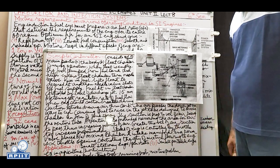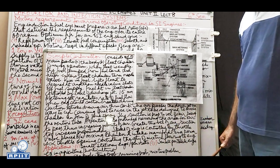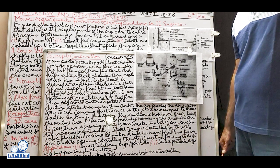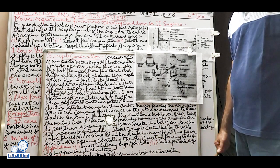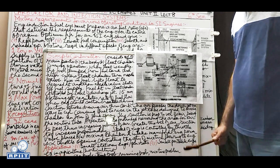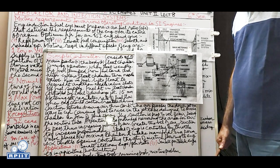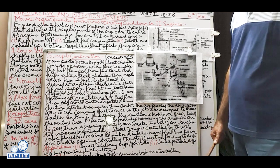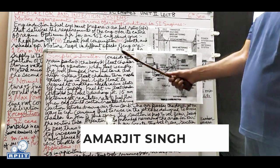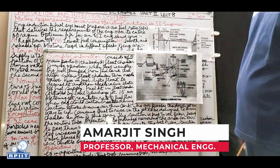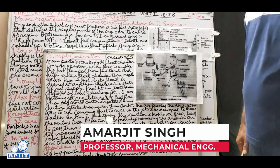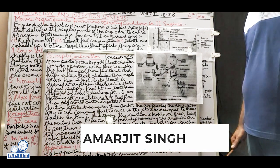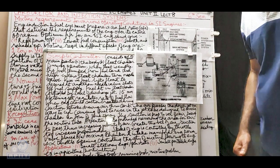The simple carburetor has been largely done away with except for the few stationary-engine applications mentioned. More sophisticated carburetors are now used in petrol cars, bikes, and scooters. With this, we complete the chapter on carburetor and injection systems. Next time, we will proceed as per the syllabus to the next topic. Thank you.